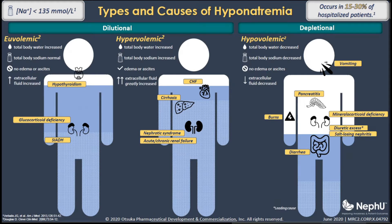Fourth, patients have elevated urinary sodium excretion despite normal salt and water intake. And last, patients have no other potential cause of euvolemic hypoosmolality — for example, hypothyroidism, hypocortisolism, or diuretic resistance.